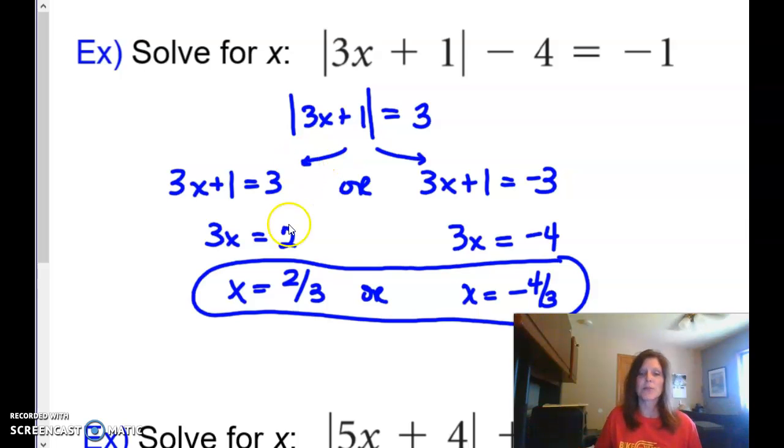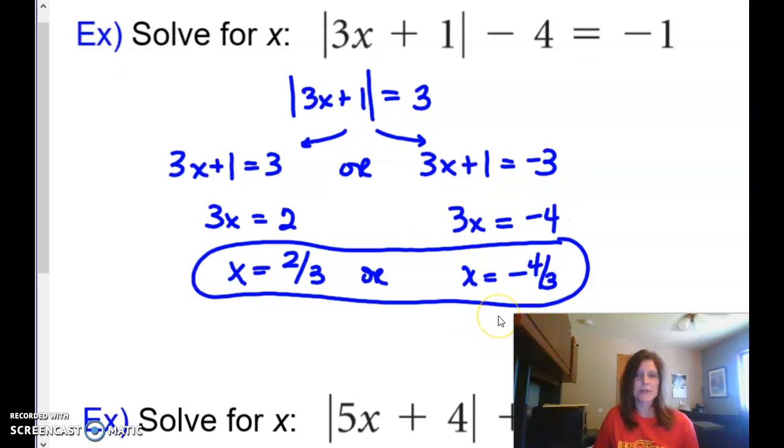Now, in this one, I put 3x plus 1. The inside stuff is equal to the positive 3, or the 3x plus 1 is equal to the negative 3. It makes no difference which one you write down first. The point is that you remember that you have to get both of them, either the negative or equal to the positive. Work those out, and I get my two answers here.